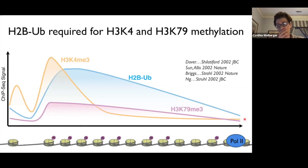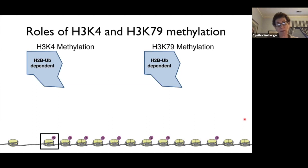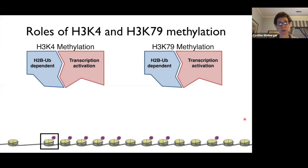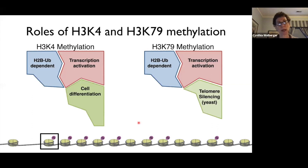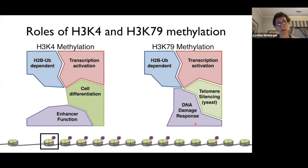Both of these methyl marks are dependent on mono-ubiquitination of H2B and both are involved in activating transcription, though they play somewhat different biological roles. H3K4 methylation is important in cell differentiation and enhancer function, while H3K79 methylation plays a specific role in telomeric silencing in yeast and in DNA damage response. Misregulation of both methyl marks is implicated in a variety of cancers.